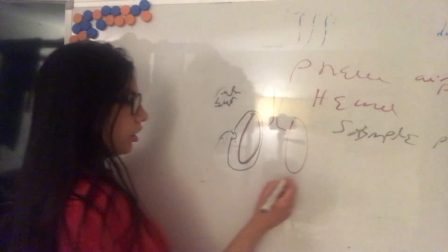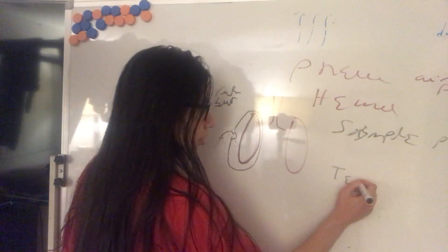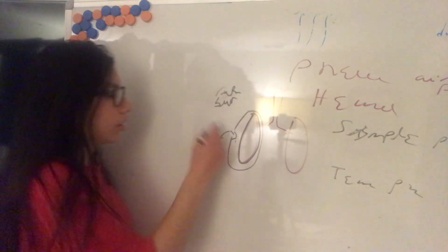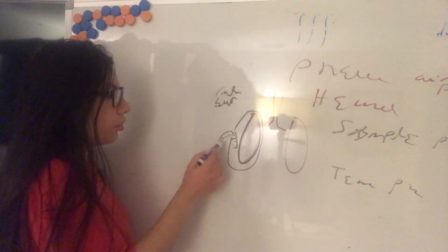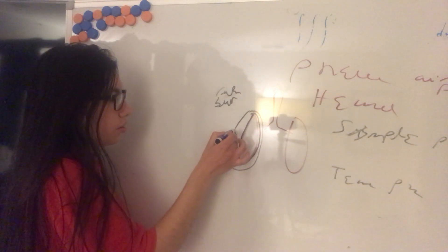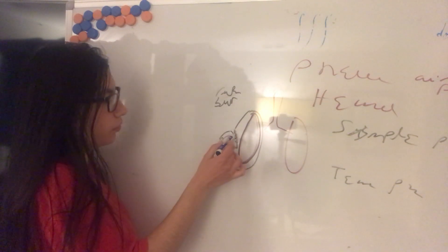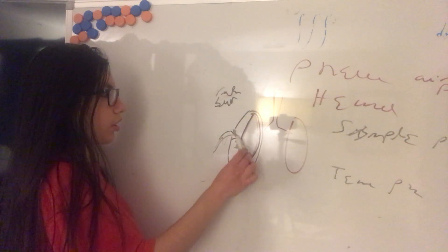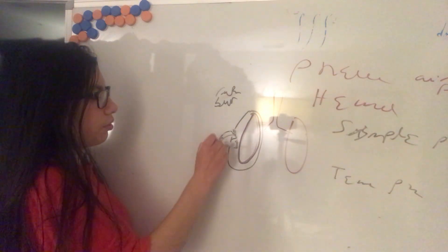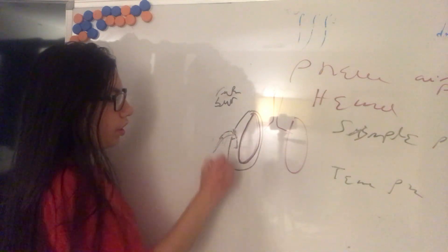Then we can have the tension pneumothorax. That is when the air is coming to the intrapleural space but cannot go outside. So here could be the skin or some part of the pleura is impeding that the air goes out and so just the air is coming in the intrapleural space.